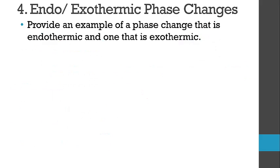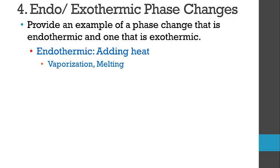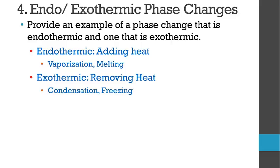Provide an example of a phase change that is endothermic and one that is exothermic. Endothermic means adding heat, so that could be vaporization — going from liquid to gas — or melting — going from solid to liquid. Exothermic is any phase change where heat is removed, such as condensation — gas to liquid — or freezing — liquid to solid.